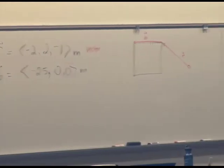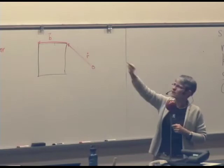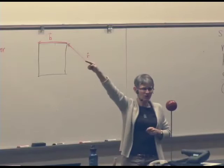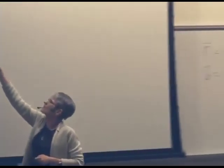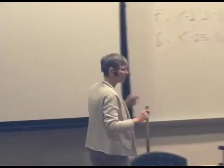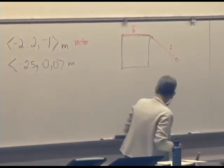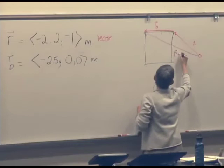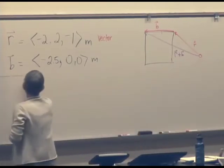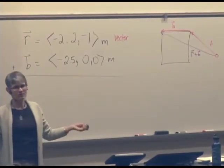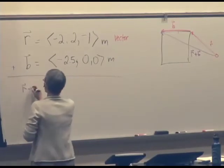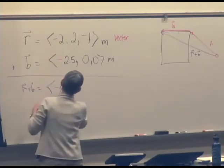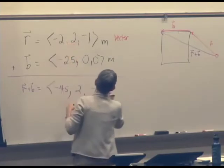Now suppose I wanted to know where I'd get to if I started here and I walked along the vector R and then I walked along the vector B. I'd get to this corner. So where would that location be in terms of that origin? It is indeed just R plus B. Not surprisingly, we just add the X components, add the Y components, add the Z components.